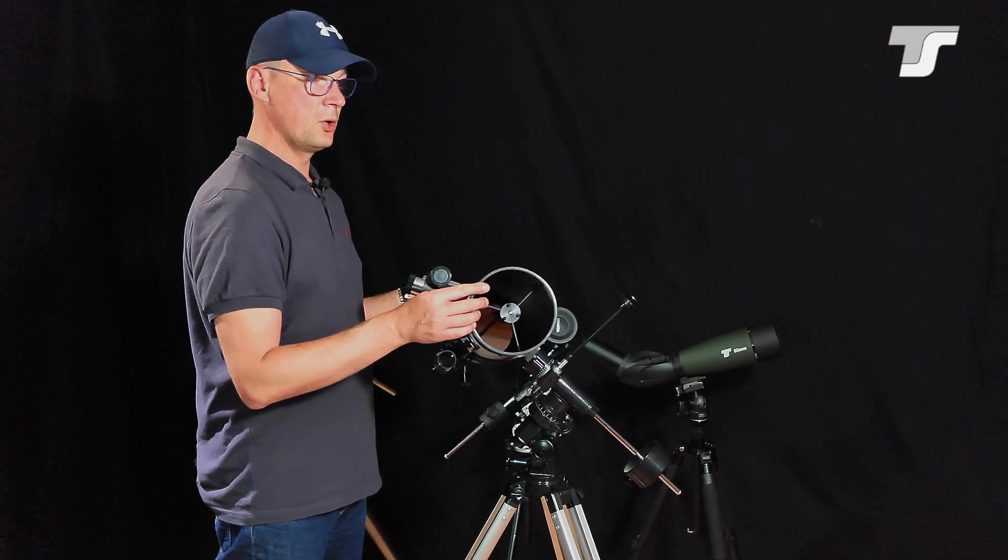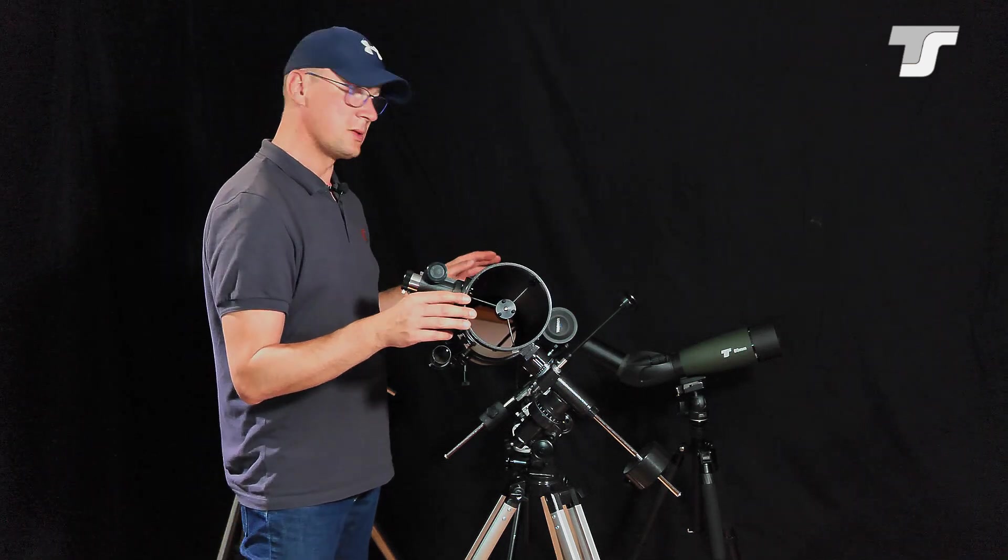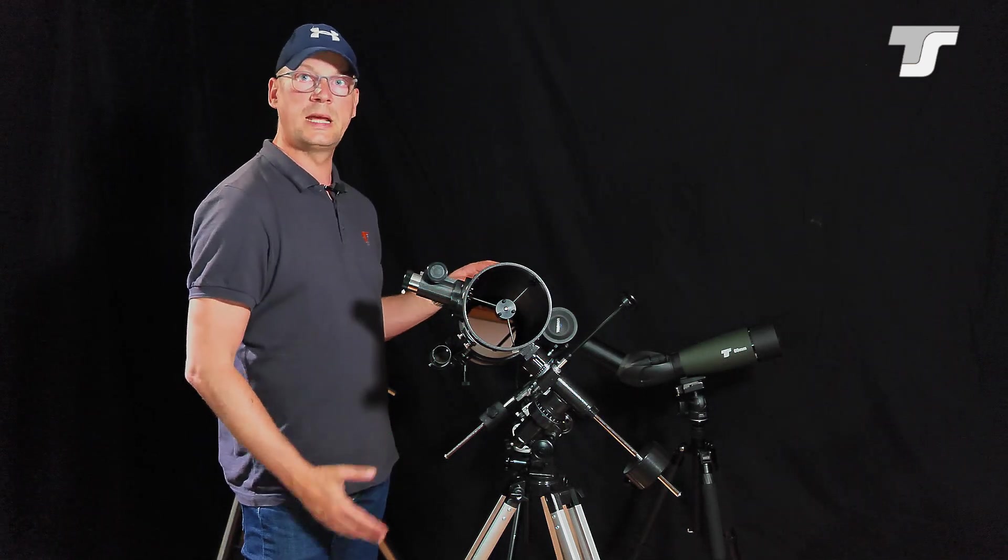For a lens you need at least two surfaces and also a very high quality transmitting material. With a mirror that's more easy to manufacture. This is also the reason why mirror telescopes can be very big.